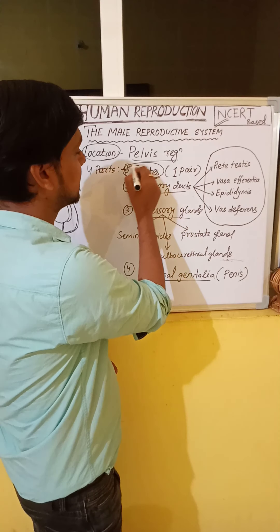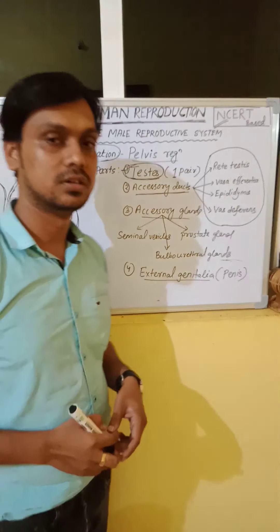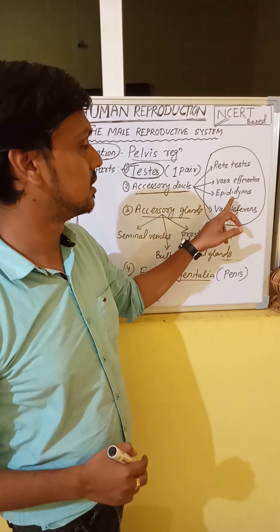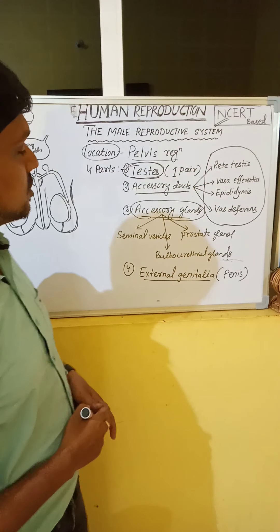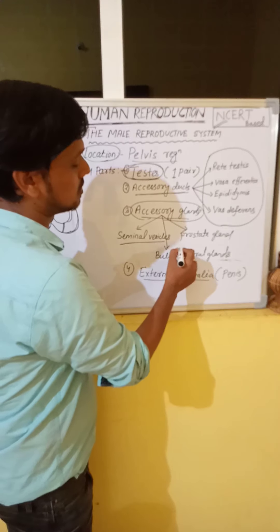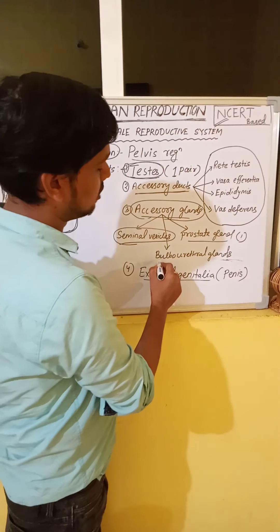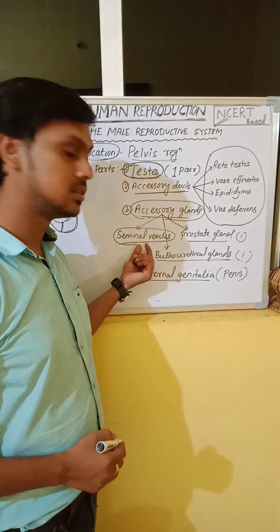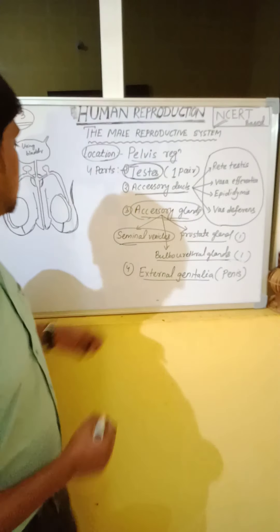The testes are present inside the scrotal sac. The accessory ducts present in the male reproductive system are: rete testis, vasa efferentia, epididymis, and vas deferens. There are three types of accessory glands: seminal vesicles (one pair), prostate gland, and bulbourethral gland (one pair). Seminal vesicles are present near the prostate gland region, and the ejaculatory duct is also present there.